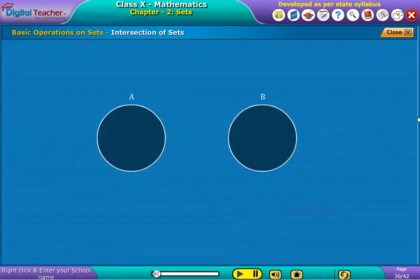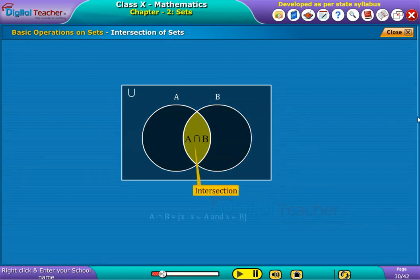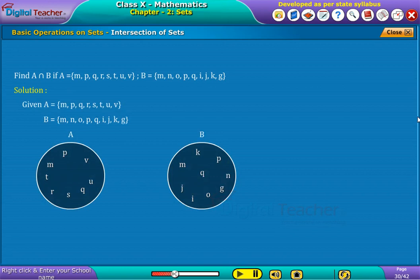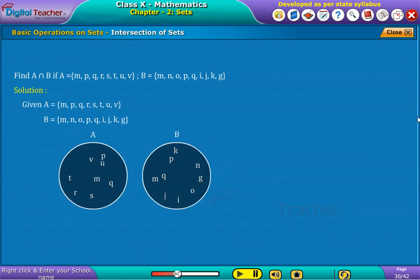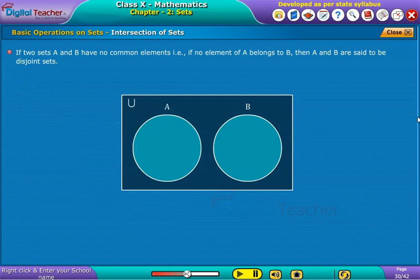Intersection of sets. If two sets A and B have no common elements, that is, if no elements are common to both sets A and B, then A and B are said to be disjoint sets.